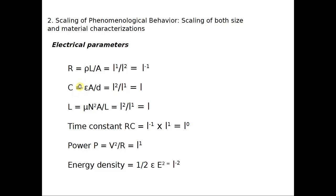Next, the formula for capacitance: C equals epsilon times A divided by D, where epsilon is the permittivity, A is the area of the parallel plate capacitor, and D is the distance between the plates. Area is proportional to L squared and D is proportional to L, so we get L squared over L, which is L to the power of plus 1. If I reduce the size, capacitance also reduces by the same factor.